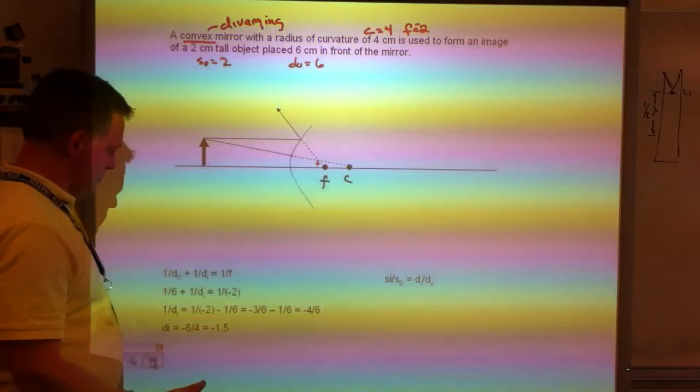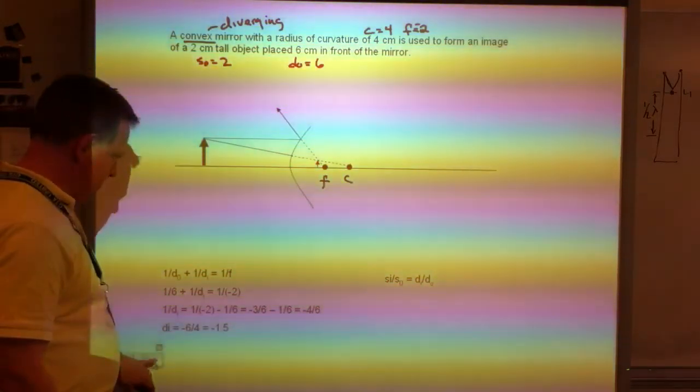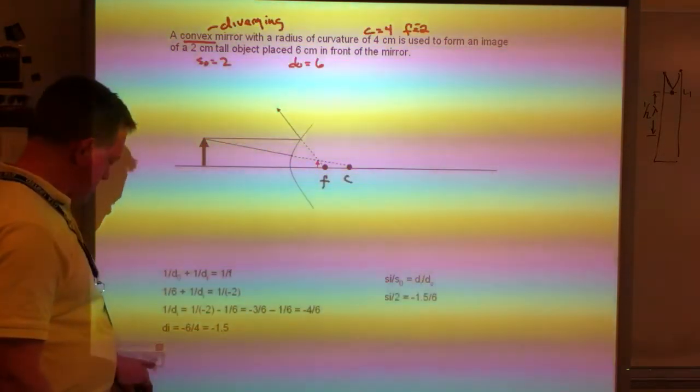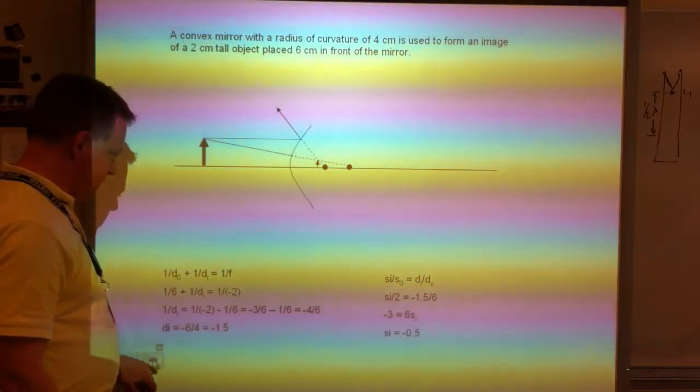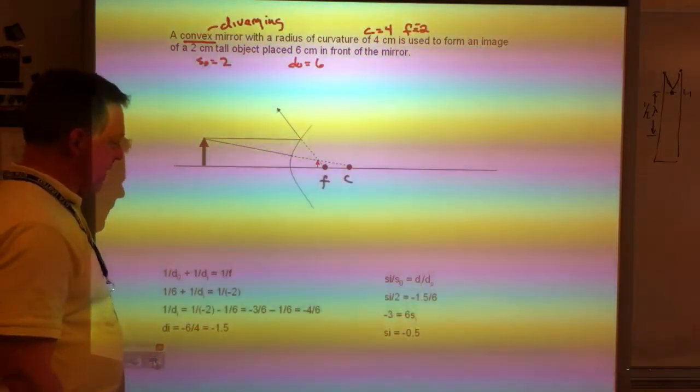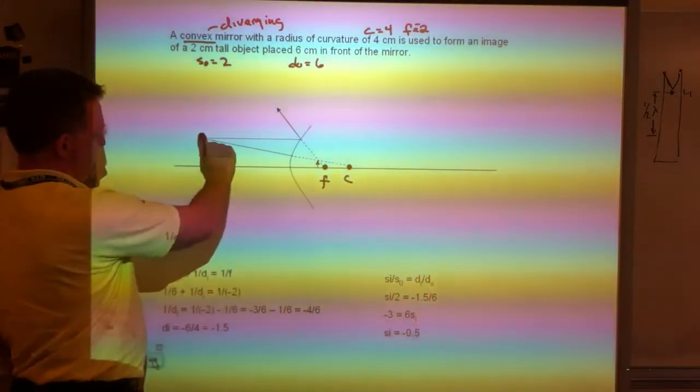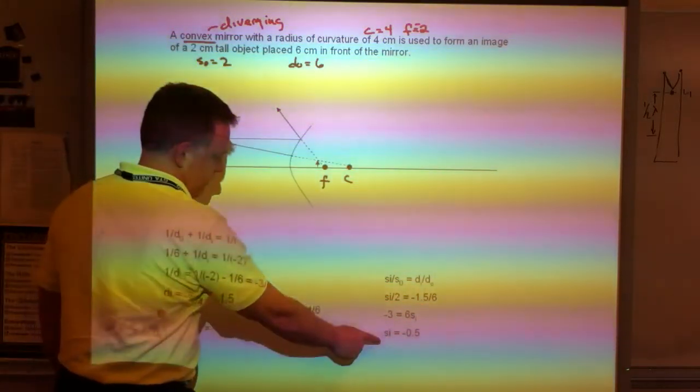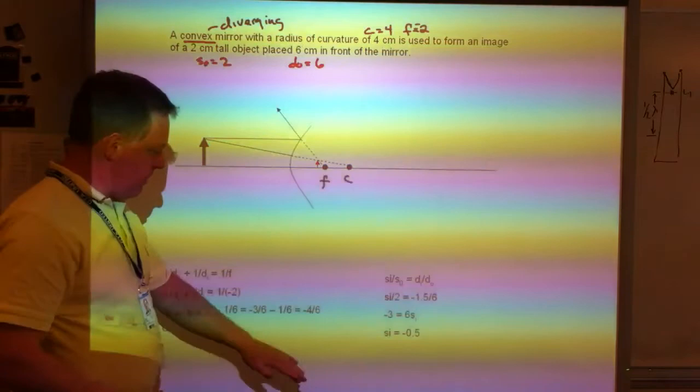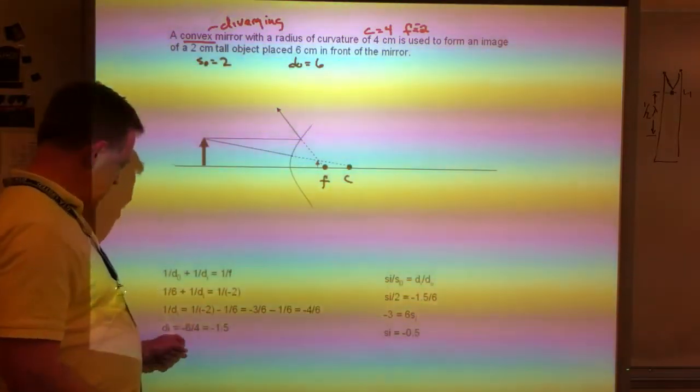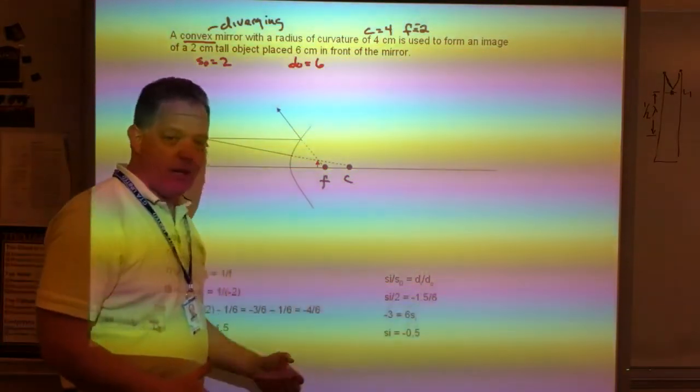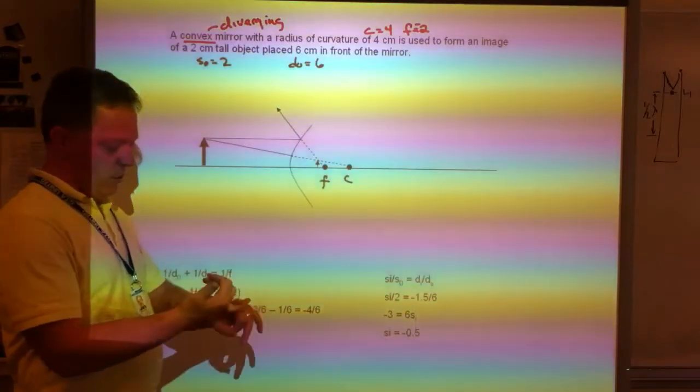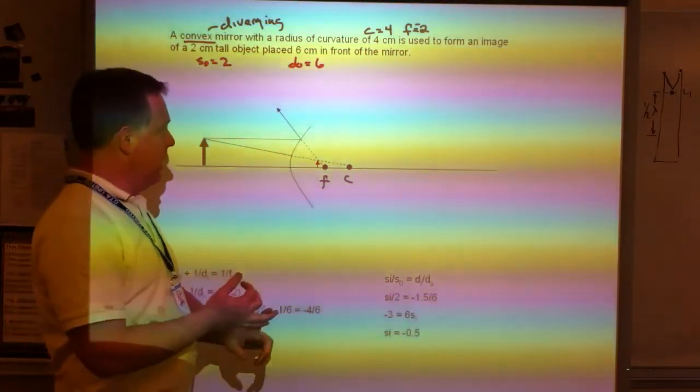For the size, we use the magnification equation. Plug in our values, and we end up with a size of negative 0.5. That makes sense as well, because the size of this object was 2. This is much shorter, 0.5. What did negative mean when we do DI's and SI's? When they are negative, that means it's going to be a virtual right-side-up object.